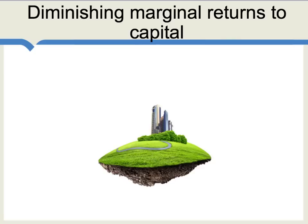The assumption of diminishing marginal returns to capital is key to the Solow model. If you think of the situation portrayed in this picture — here's a city and someone needs to build a road to the city. Maybe that's the first road you build, and that road is of very high value. When the capital stock is low and there aren't many roads, the first roads that you build are extremely valuable. That's the high marginal rate of return on capital, and in the Solow model that tends to spur growth and encourage capital accumulation.